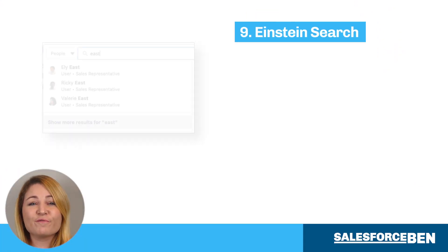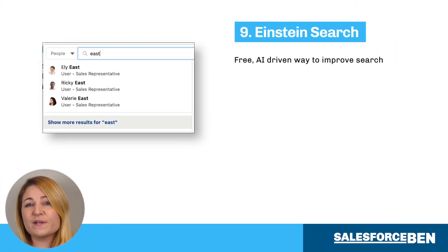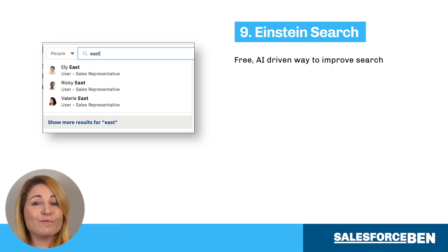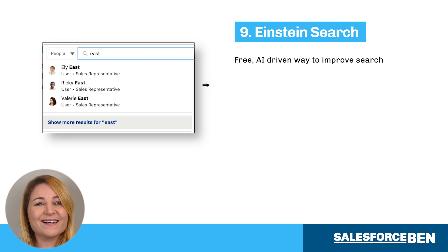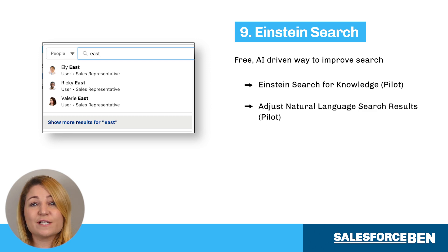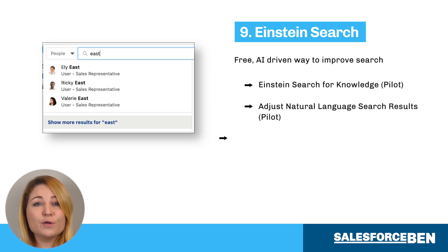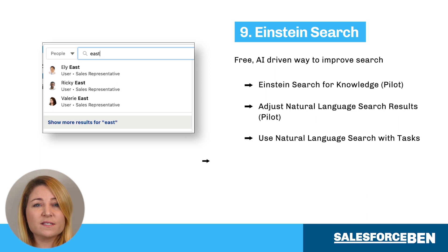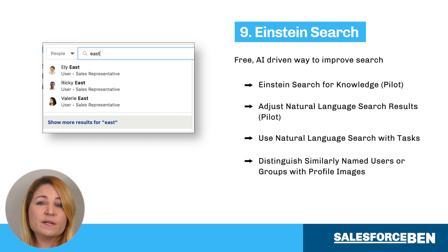Einstein Search is a free, artificial intelligence-driven way to improve search. It's been around for a while, but here are a few updates. Einstein Search for Knowledge is in Pilot. Adjust Natural Language Search results is also in Pilot. Use Natural Language Search with tasks, and you can now distinguish between different users and groups using profile images.